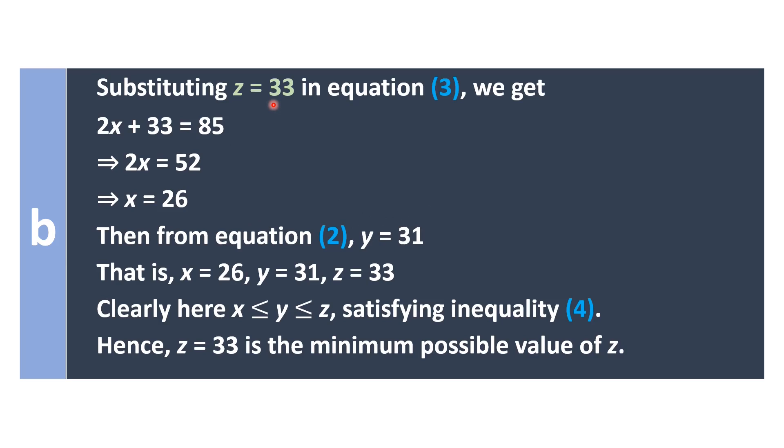Substituting Z equals 33 in equation 3 we get 2X plus 33 equals 85. This implies that 2X equals 52, which in turn implies that X equals 26. Then by equation 2, Y equals 26 plus 5, that is 31. Therefore, X equals 26, Y equals 31 and Z equals 33 in this case.